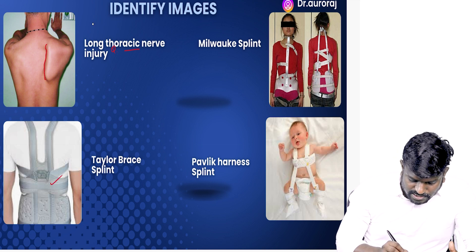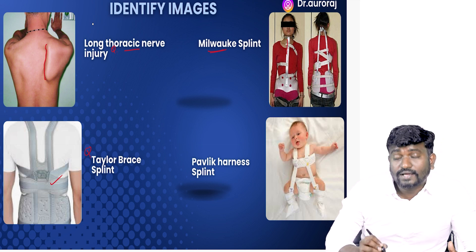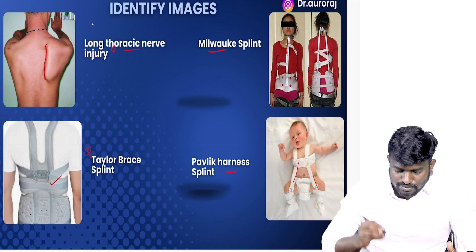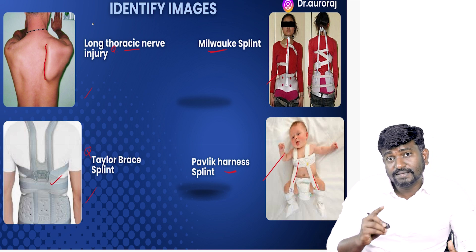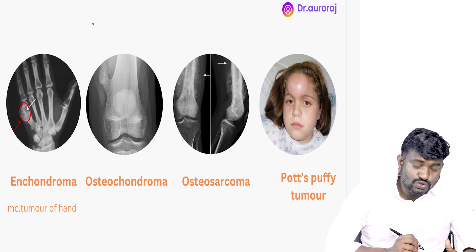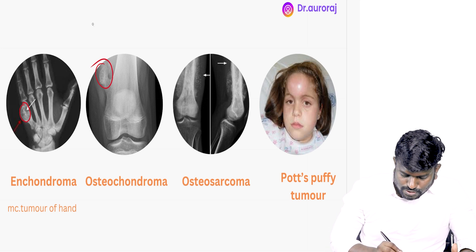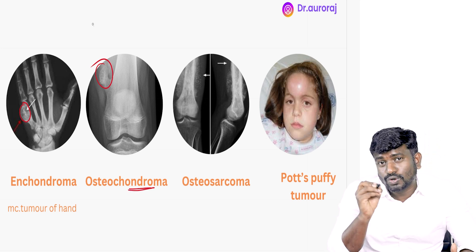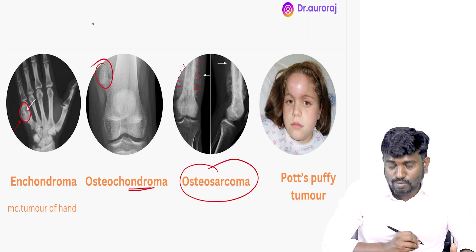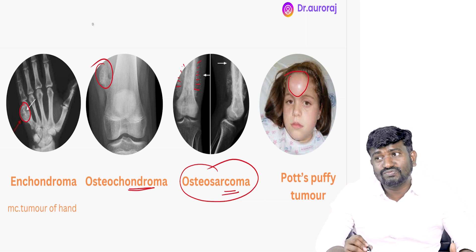This is going to be the image of the Taylor-Brace splint. This splint is called the Milwaukee splint. And this is called the Pavlik harness splint. Please look at the images and try to revise them. This tumor is called enchondroma — the most common tumor of the hand. This one is called osteochondroma. The image having sunray appearance is osteosarcoma. And this one is going to be Pott's tumor.